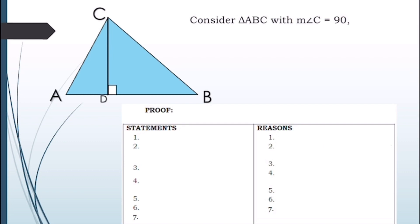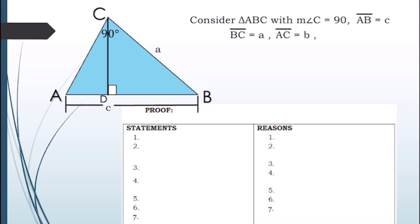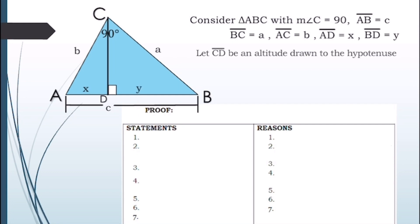Consider triangle ABC with the degree measure of angle C equal to 90 degrees. Line segment AB equals c, line segment BC equals a, and line segment AC equals b. Line segment AD equals x, and line segment BD equals y. Let line segment CD be an altitude drawn to the hypotenuse. We will now prove that a² + b² = c².